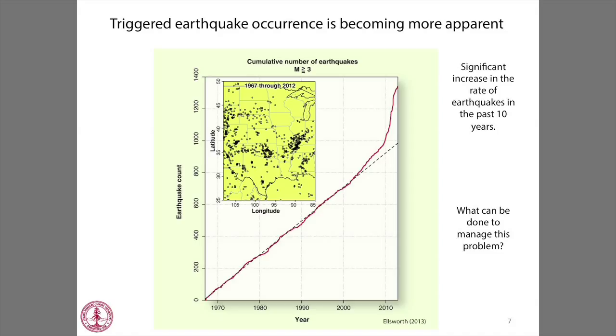Rick also showed a figure very similar to this one. The x-axis is year and the y-axis is the cumulative number of earthquakes of magnitude 3 and greater. This plot was made by Bill Ellsworth at the USGS. Starting about 2001, and especially around 2009, the number of magnitude 3 and greater earthquakes in the mid-continent really took off. There are now more magnitude 3 and greater earthquakes in the state of Oklahoma than in California. The Oklahoma Geological Survey just last week officially attributed this increase to saltwater disposal and fluid injection. That's why understanding how to manage this risk is important.